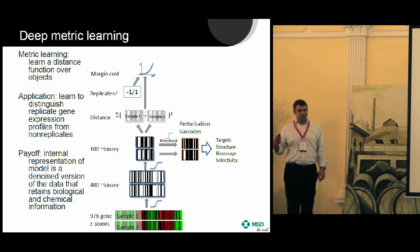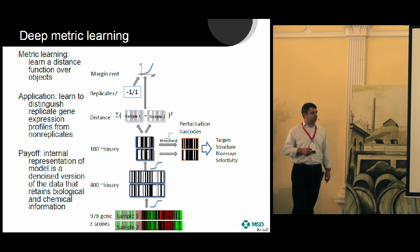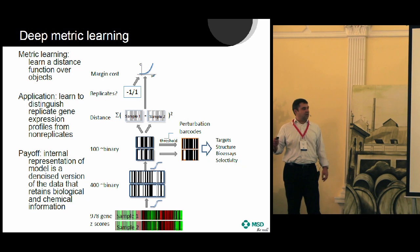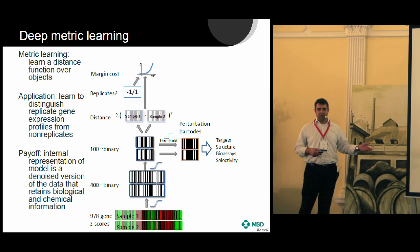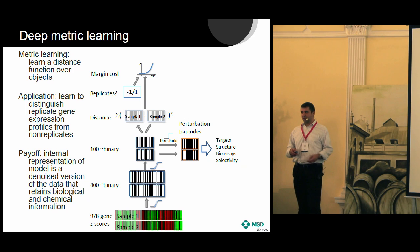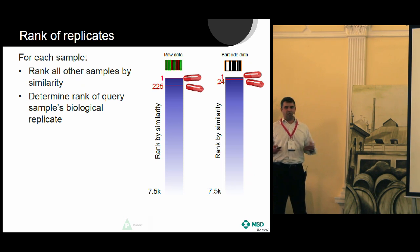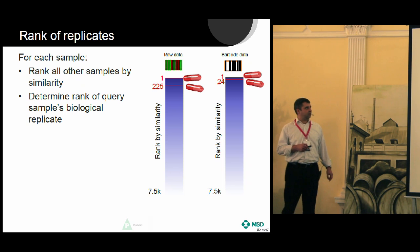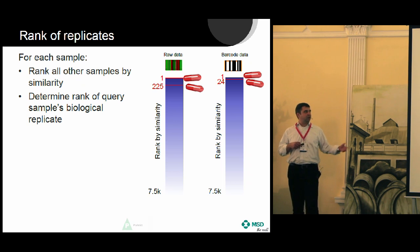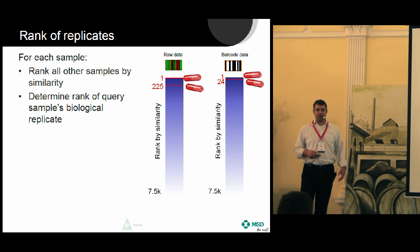What I want to convince you of is that this does a better job than the original data — not only representing what's a replicate and what's not, but giving information about the compound's target, structure, and activity across other assays. In the raw data, your replicate is approximately 225th in the list; in the barcode data it's 24th. That's good, but that's what the model was trained to do. What's more interesting is what else it does.